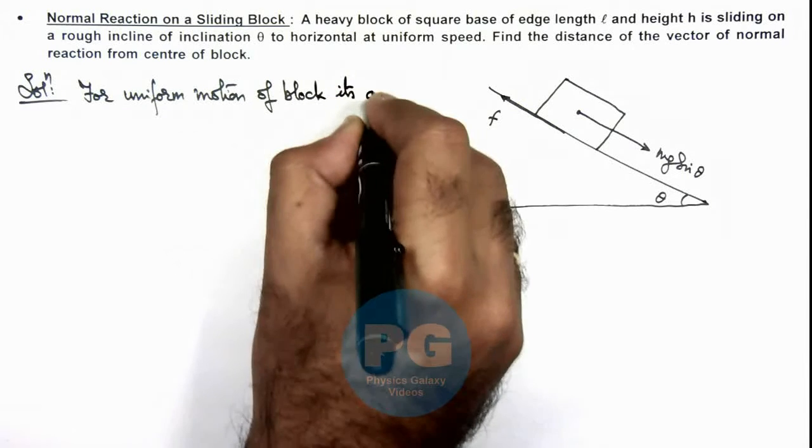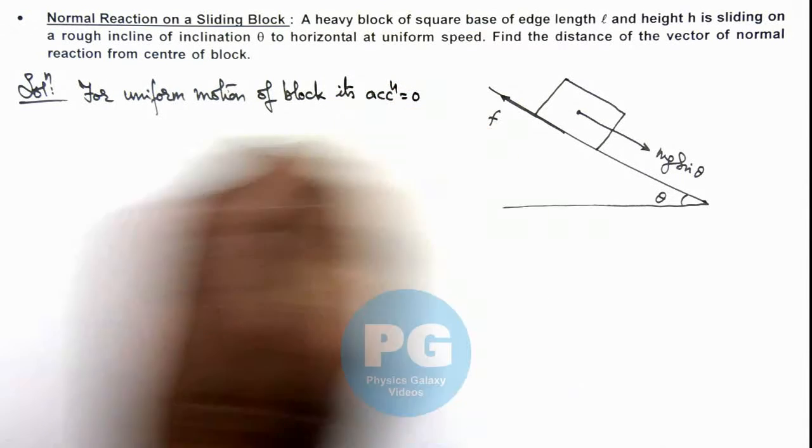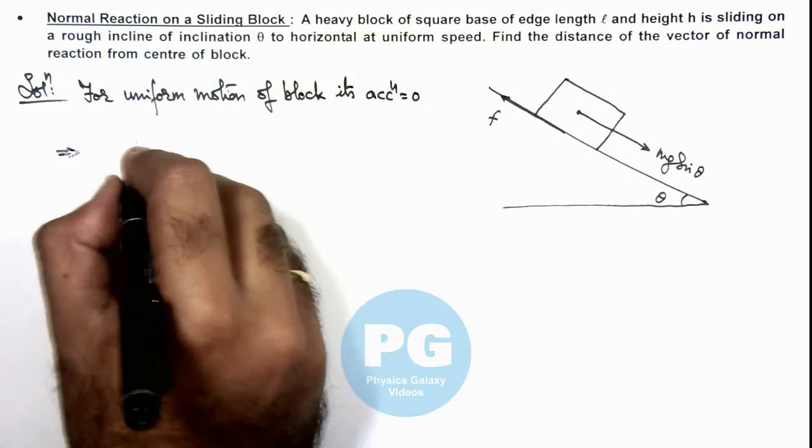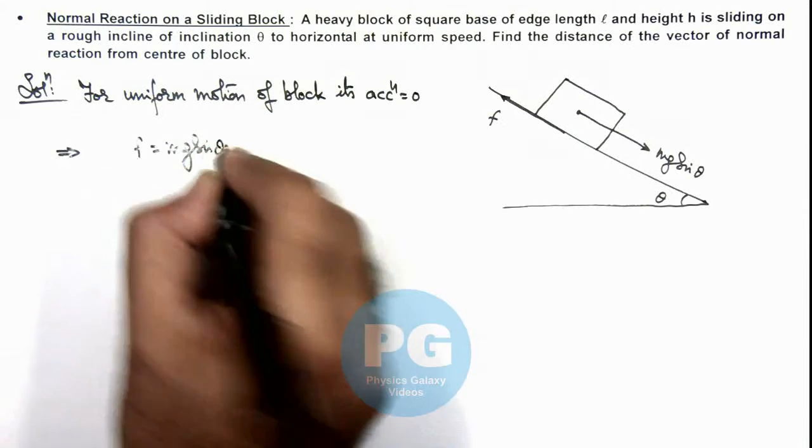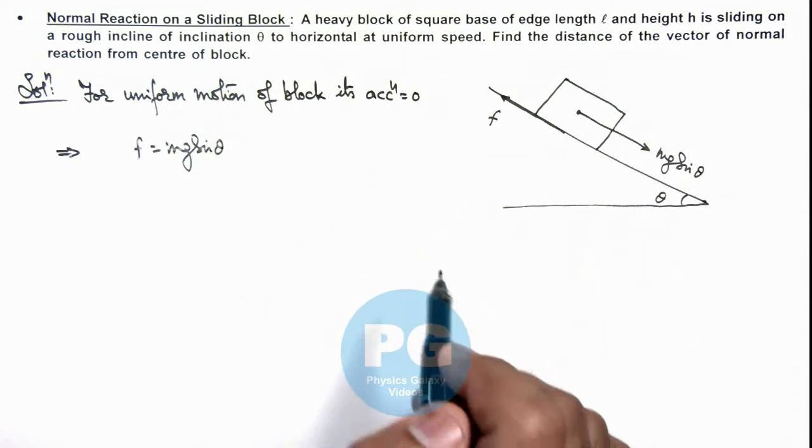Its acceleration would be equal to zero, which implies the value of friction is equal to mg sin theta so that it'll not accelerate along incline.